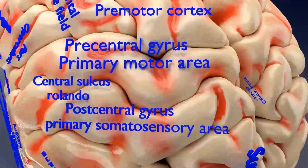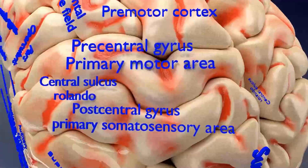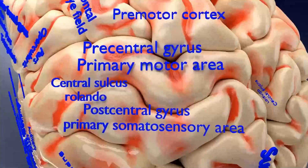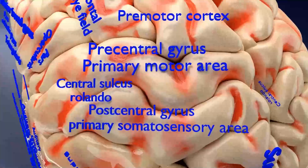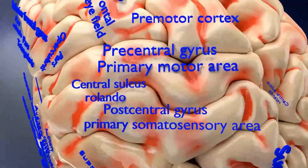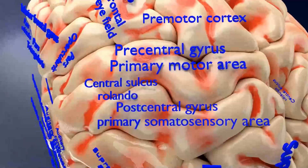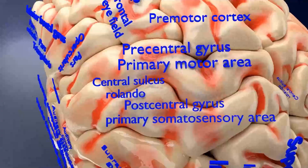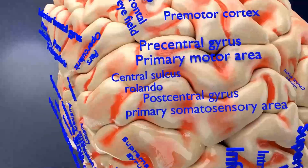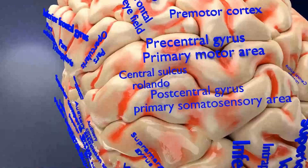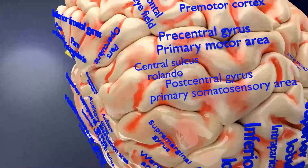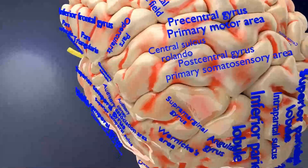The parietal lobe, which is predominantly sensory, is posterior to the central sulcus of Rolando. It is divided into three parts: the post-central gyrus, the inferior parietal lobule, and the superior parietal lobule. The post-central gyrus is the primary somatosensory area, receiving sensory input from the opposite half of the body, with sequential representation in the same order as the primary motor area.